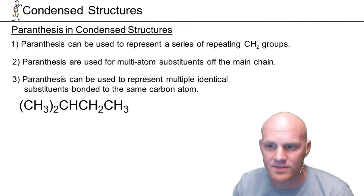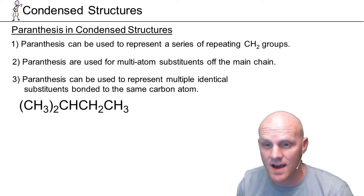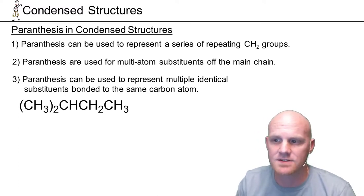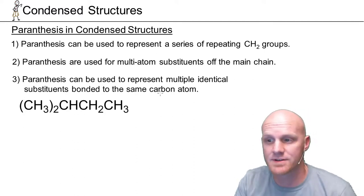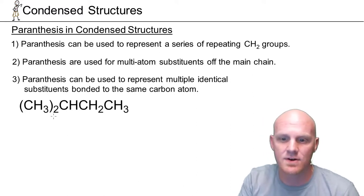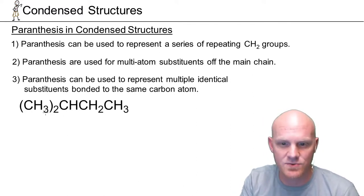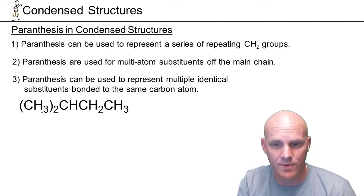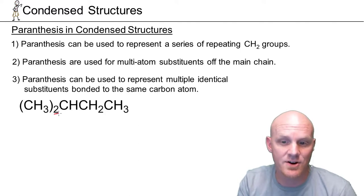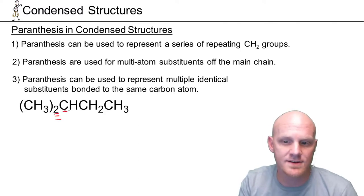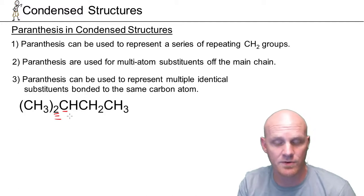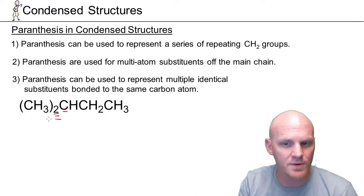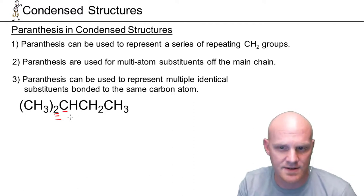The third use of parentheses is really just a special case of the second use. If you've got multiple identical substituents bonded to the same carbon atom — and again, these will be many-atom substituents — we'll use parentheses in that case. So if we look here, we've got CH3 in parentheses. Normally if it's not a CH2, it means it's a multi-atom branch coming off the main chain. In this case there are two of them, bonded to the next carbon we see.